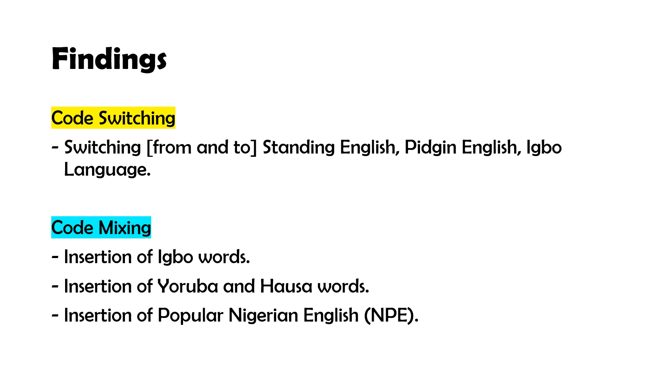In the third article, content analysis was used as a methodological framework, with sub-frameworks at the lexical and sentential levels. The findings showed that in the three novels there are two linguistic practices — code switching and code mixing — switching among standard English, Pidgin English, and Igbo language. There is also evidence of code mixing: insertion of Igbo words, Yoruba and Hausa words, and popular Nigerian English expressions.